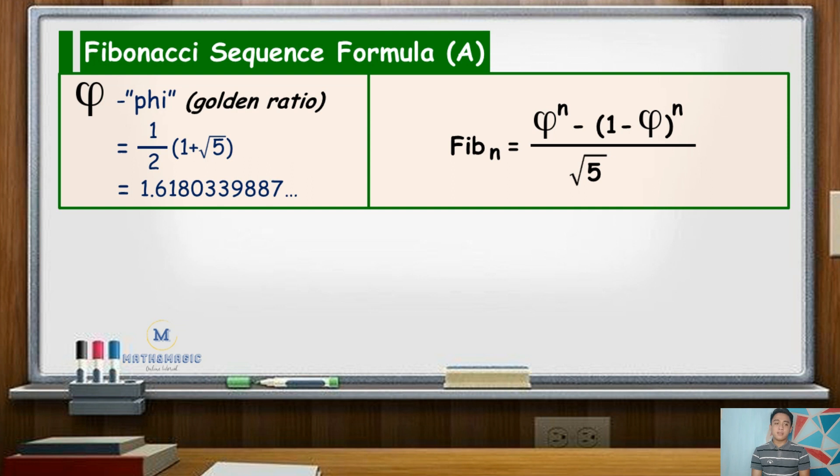The formula for finding the nth term is Fib_n equals the golden ratio raised to n minus the nth power of quantity 1 minus the golden ratio, all over square root of 5, where n is the number of terms.